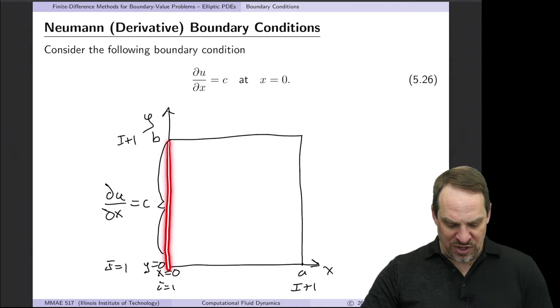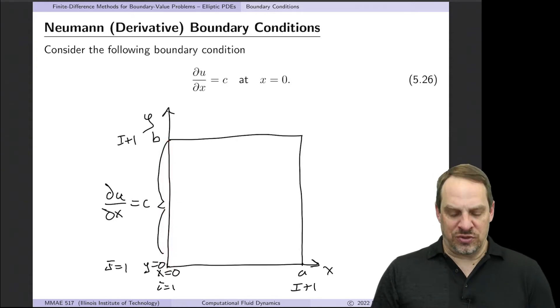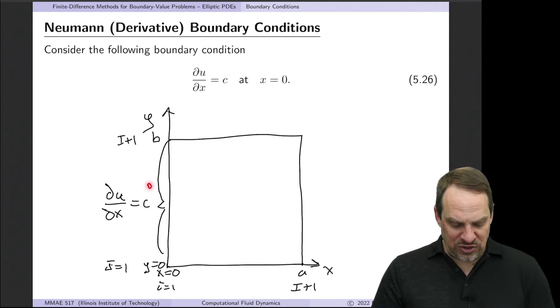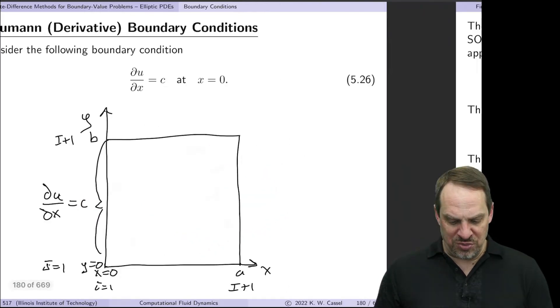That's the left boundary of our two-dimensional domain. This would be like the heat flux being specified in a heat transfer context. So the question is, how do we incorporate this boundary condition along with our general algorithm throughout the interior of the domain?